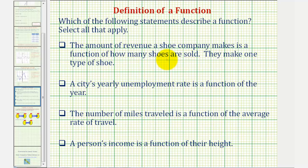If this is a function, the input would be the number of shoes and the output would be the revenue. We could say f of shoes sold would equal only one revenue amount.